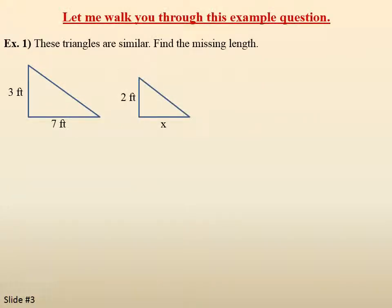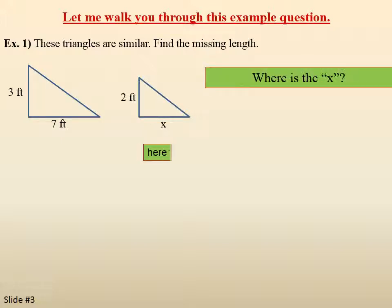Example one: these triangles are similar, find the missing length. We have two triangles. One triangle has a vertical component that's three feet and the bottom at seven feet. The other triangle has a vertical part that's two feet and the bottom part that we don't know, X — that's the missing length we're trying to find.